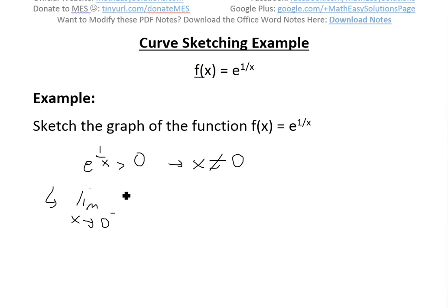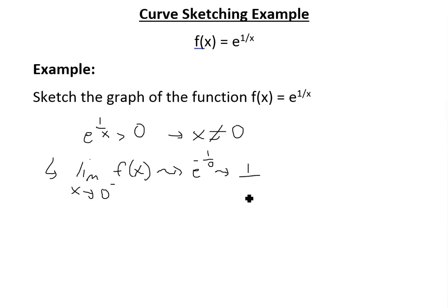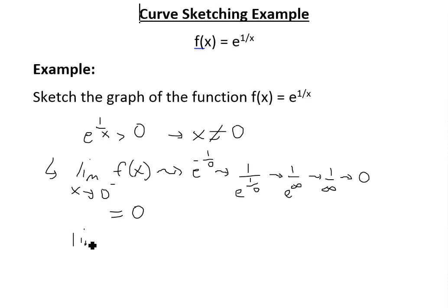As x approaches 0 from the left side, this is like plugging in a negative version of 0. So we have e to the 1 over negative 0. The power goes to negative infinity, which we can rewrite as 1 over e to the infinity — that's 1 divided by an infinite number, which approaches 0. So the limit as x approaches 0 from the left equals 0.